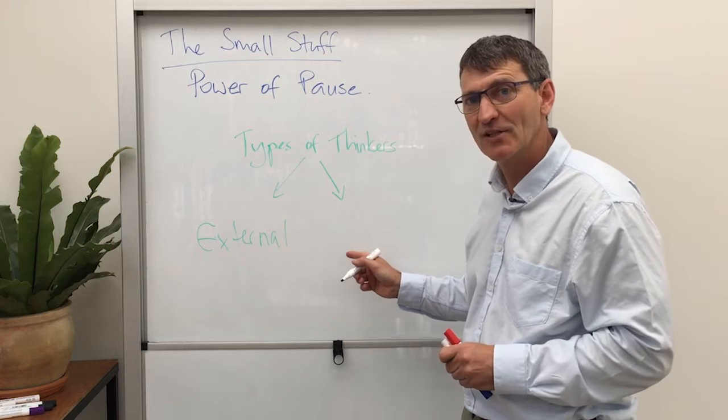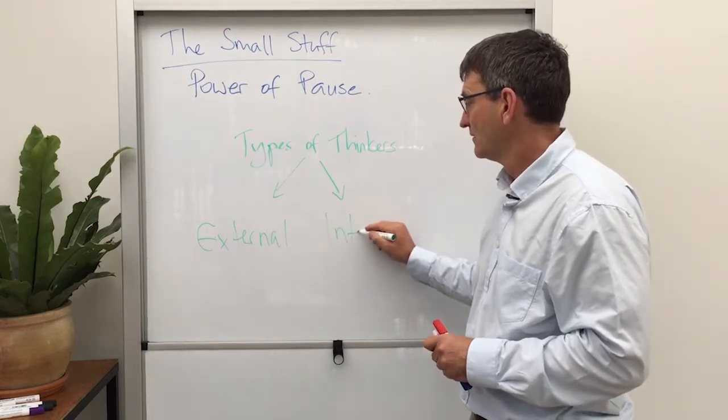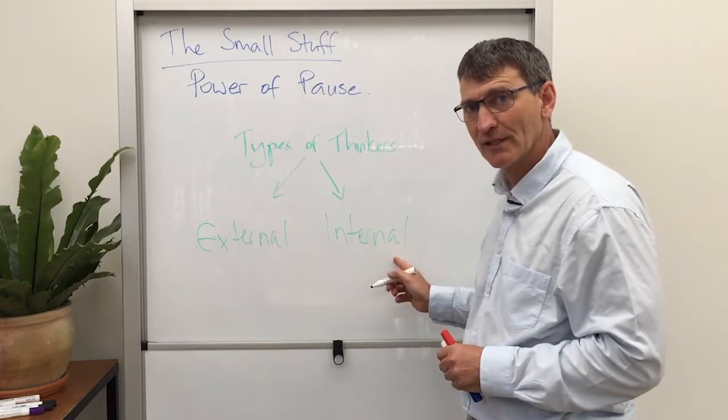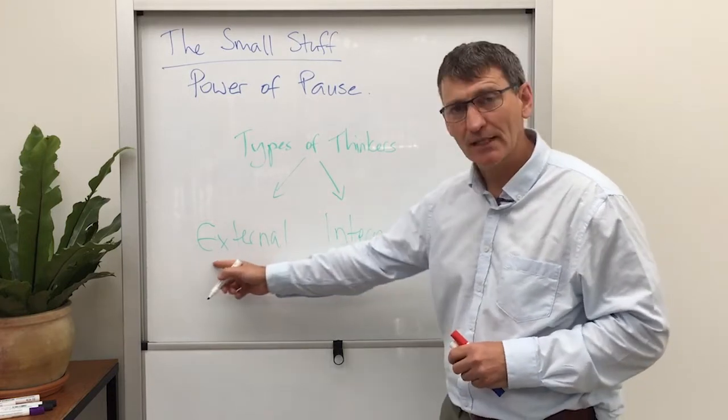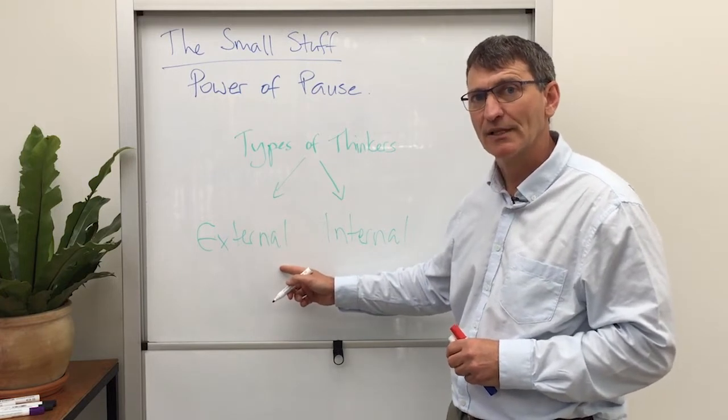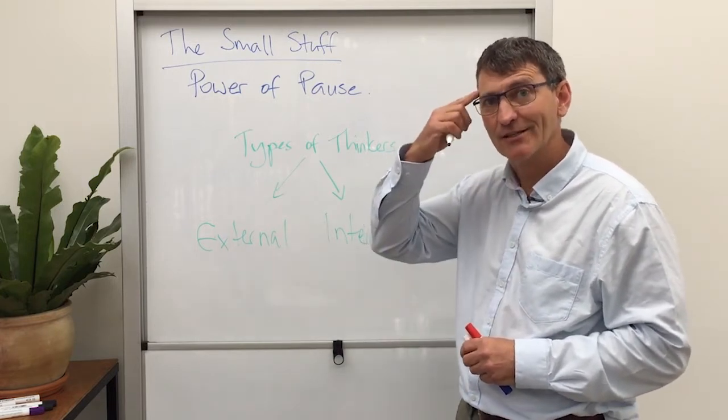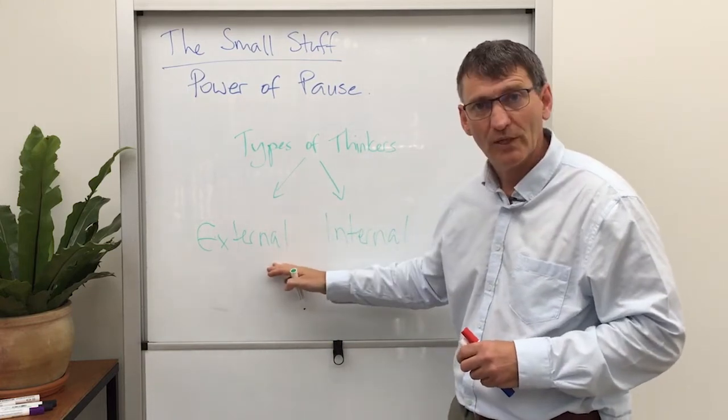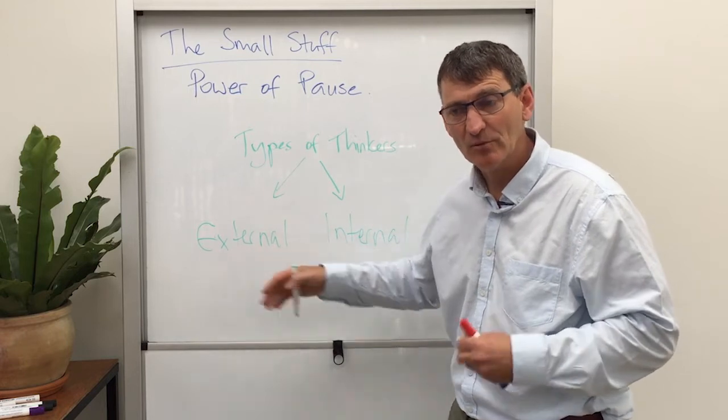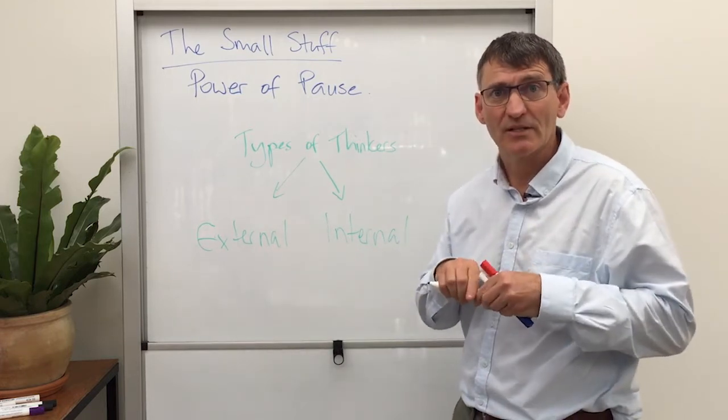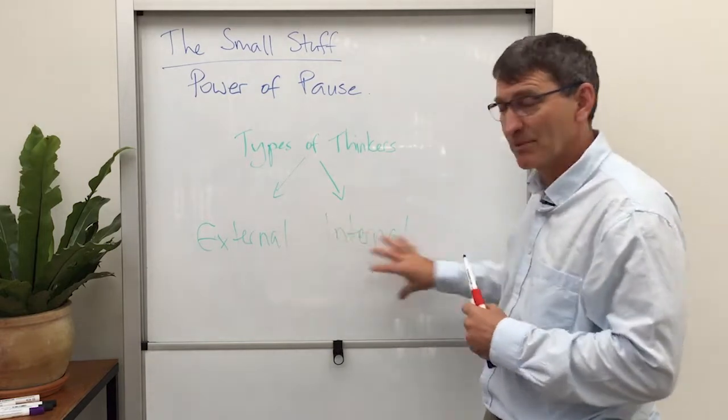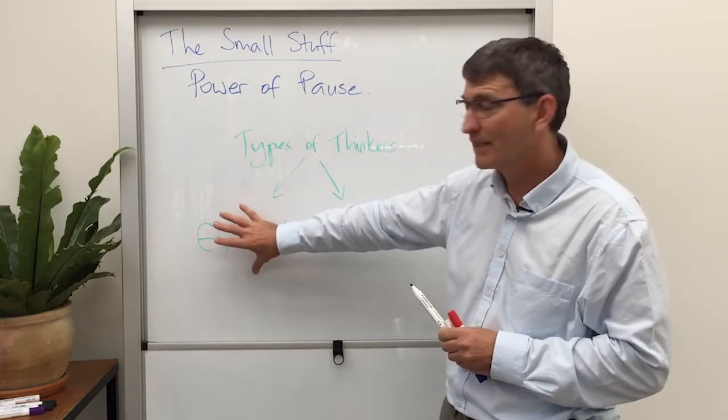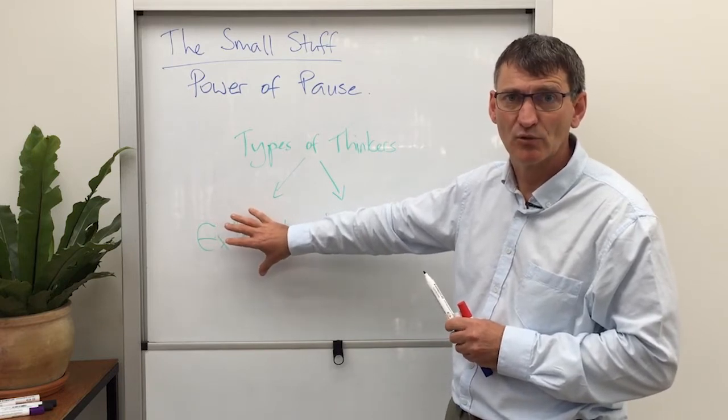However, we also have a second type of thinker who are often overlooked: internal thinkers. They go through exactly the same mental process as external thinkers, but it's happening inside. We can interrupt their thinking by allowing external thinkers to process verbally too soon, which meets our need to overcome discomfort with silence.